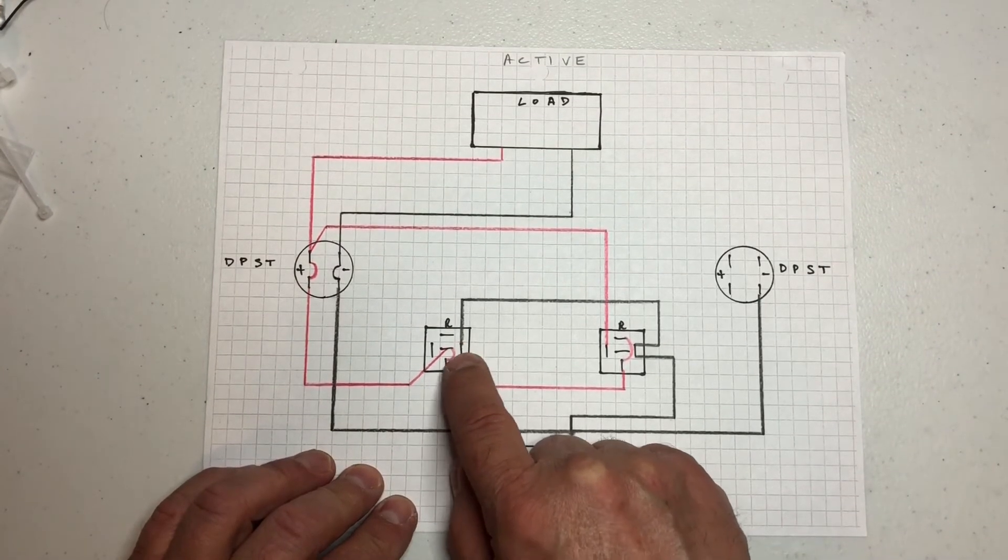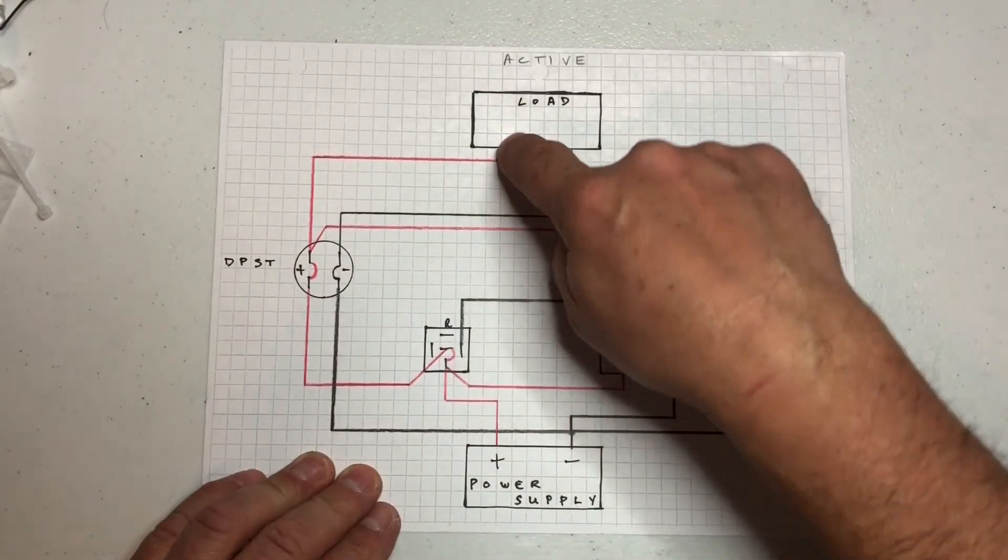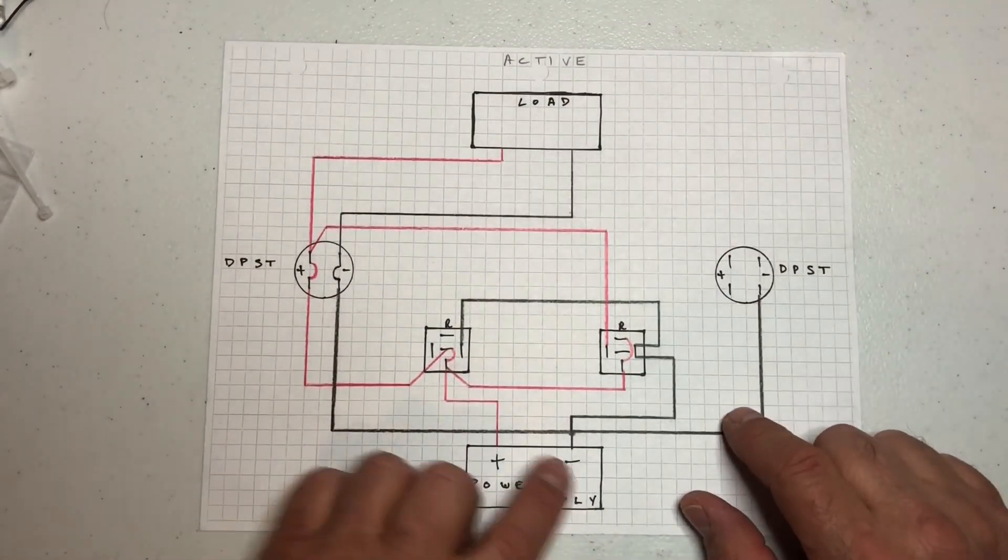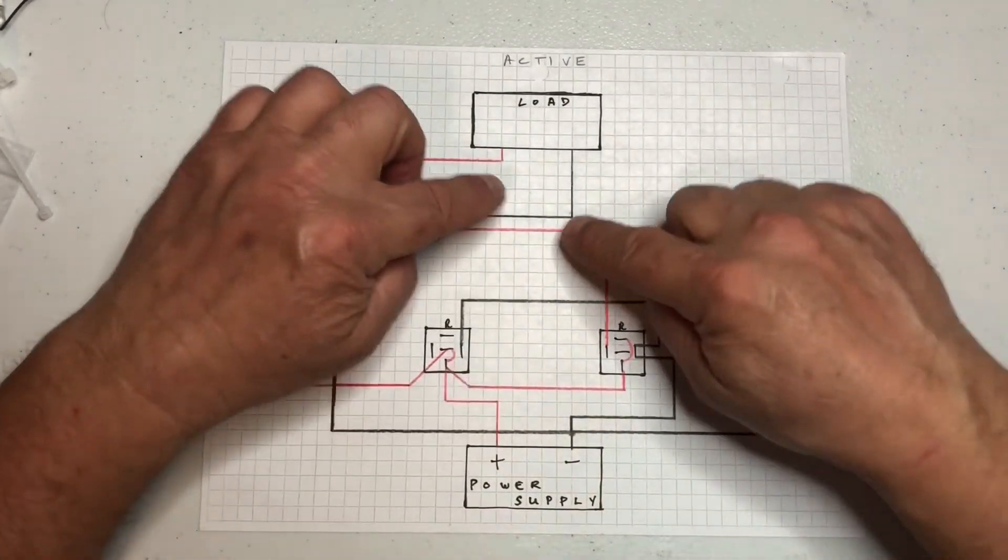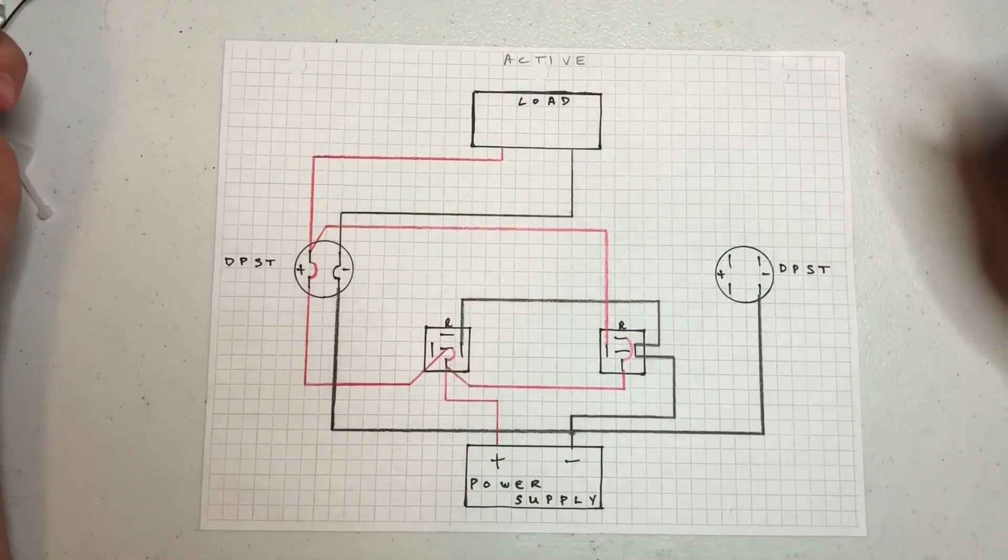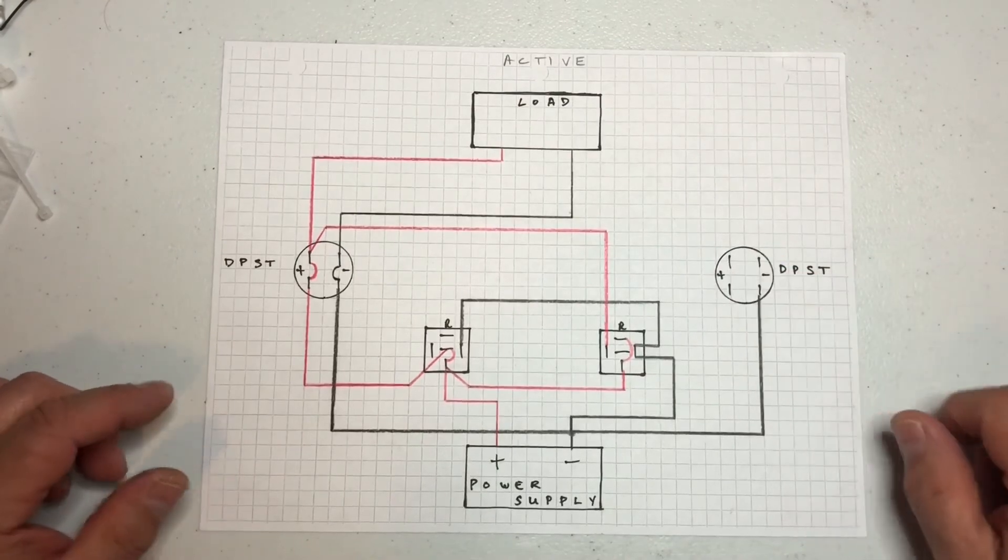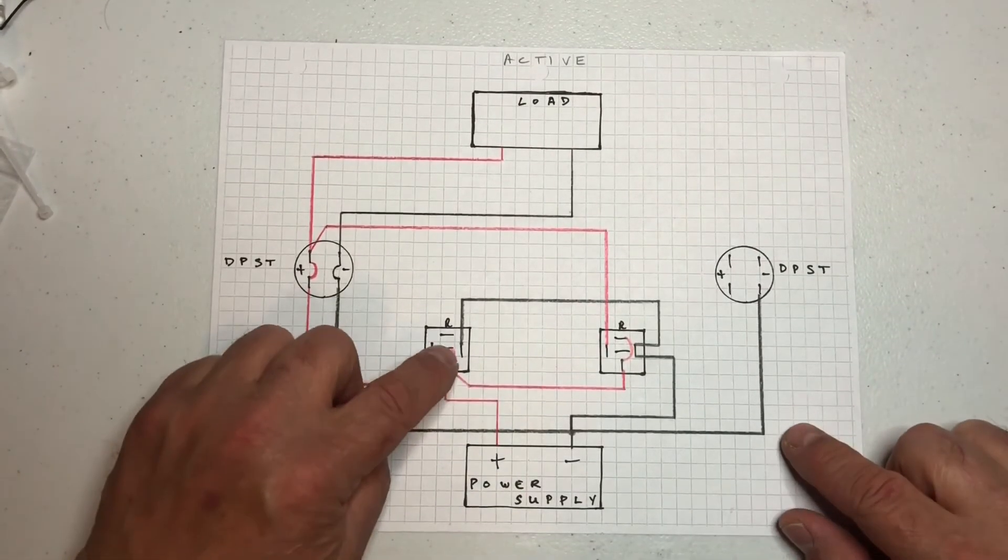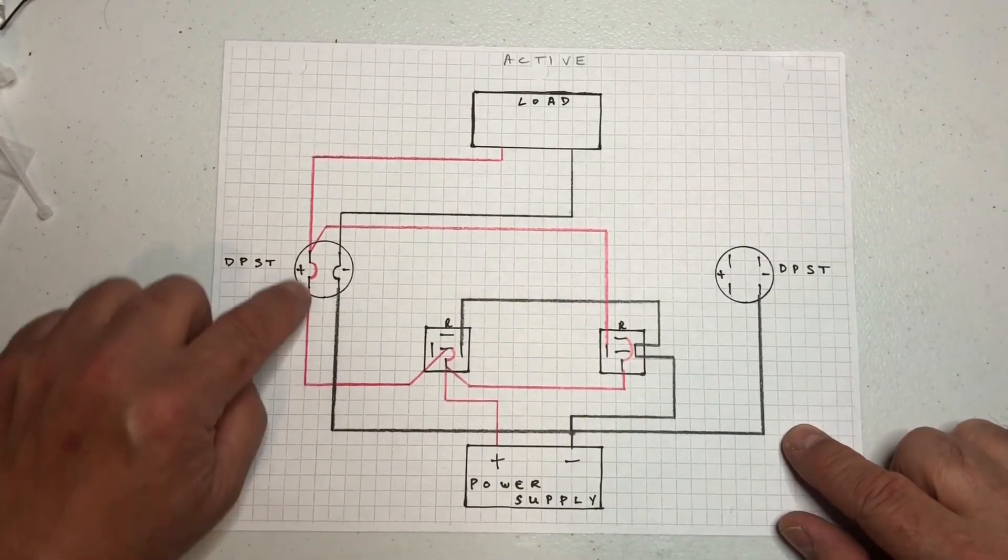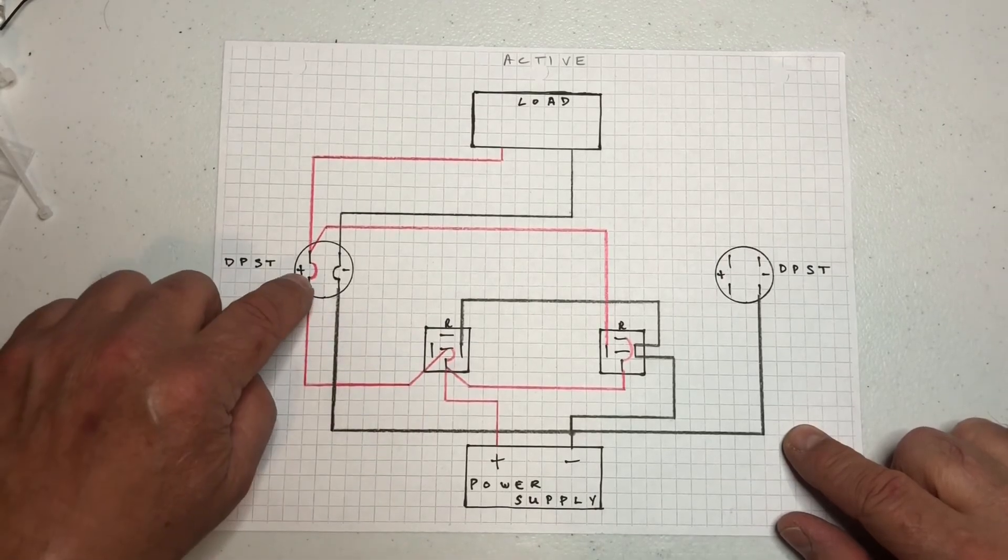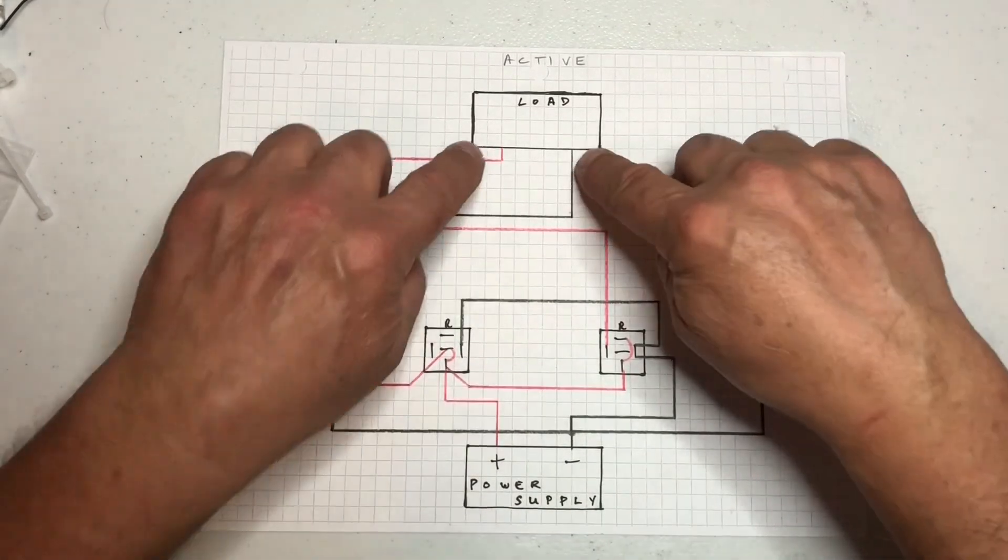This switch will be closed allowing power to go through, and the negative side would go through. This is just showing that direction. The opposite would be true if we applied this switch here. This circuit would open so no positive would be feeding this switch and then these would be reversed.